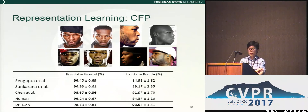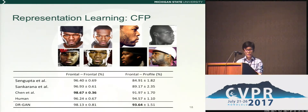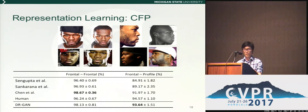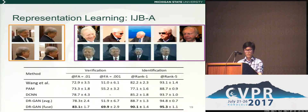We evaluate our D-AGAIN on multiple benchmark datasets. The CFP dataset defines a frontal-to-profile verification protocol, matching frontal-to-frontal or frontal-to-profile images. In this dataset, we have similar performance in frontal-to-frontal, while we improve about 1.7% in frontal-to-profile verification compared to the current state of the art. Another popular benchmark dataset is IJBA, which defines template-to-template matching, where each template is a collection of images and video frames of the same person. We also achieve state-of-the-art in all comparisons.